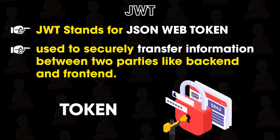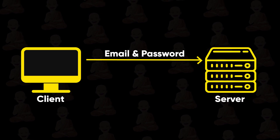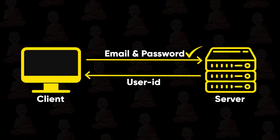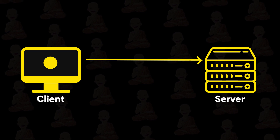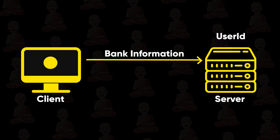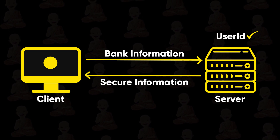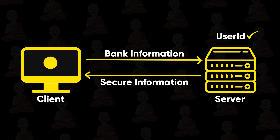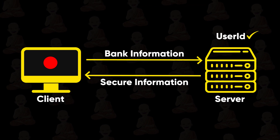Let's understand this with an example. Here is Harley. He logs in with his account information — email and password. The server first checks the information, and if it's correct, it returns his user ID as a response and stores that in JSON or a cookie. Now whenever he sends a request for some secure information, let's say all his bank information, the server first asks for the user ID, and if he has it, the server sends the secure information.